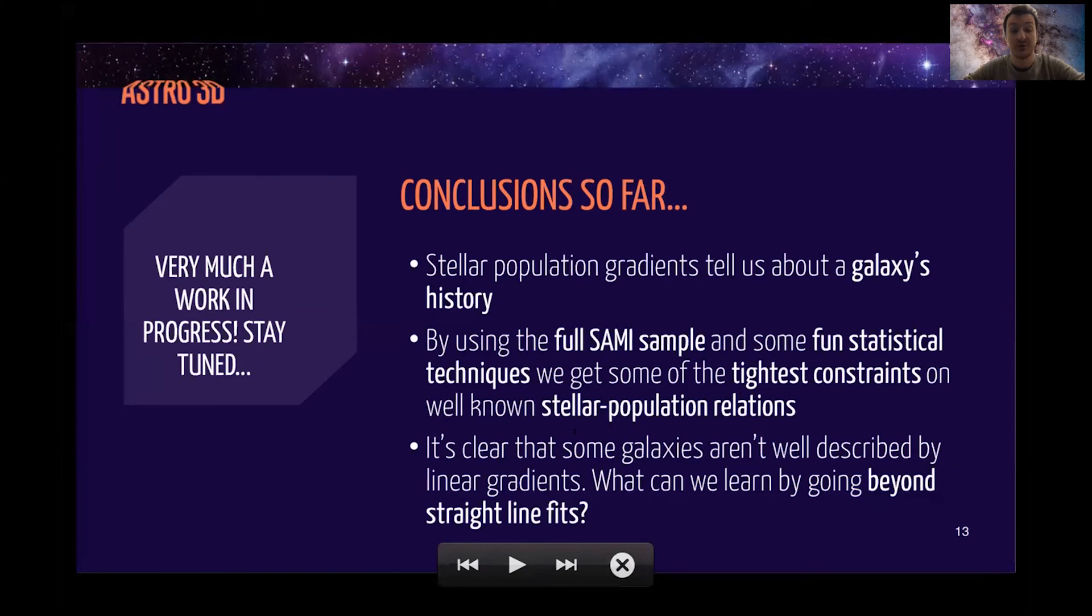I'm just going to quickly discuss my conclusions so far. This is very much a work in progress. So hopefully stay tuned for some concrete results coming out soon, but stellar population gradients tell us about a galaxy's history. By using the full SAMI sample and some fun statistical techniques, we end up with some of the tightest constraints on well-known stellar population relations. And I find it's clear that some galaxies aren't well described by straight lines. So what can we learn by going beyond these simple linear gradients? Thanks very much for listening. And I'm happy to take any questions.